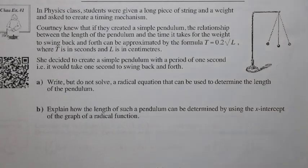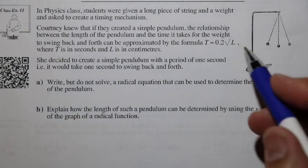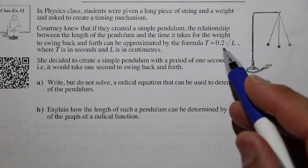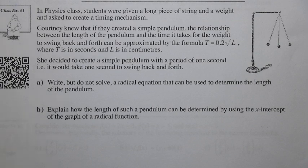Let's take a look at class example one. In physics class, you're given a long piece of string and a weight and asked to create a timing mechanism. Courtney knew that if they created a simple pendulum, the relationship between the length of the pendulum and the time it takes for the weight to swing back and forth can be approximated by this formula: t is equal to 0.2 times the square root of L. t is in seconds, L is in centimeters. She decides to create a simple pendulum with a period of one second. Let's write, but not solve, the radical equation that can be used to determine the length of the pendulum.